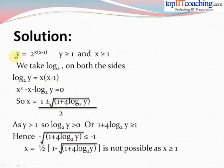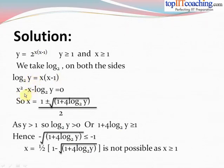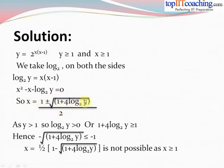Given y = 2^(x(x−1)), with the condition that y ≥ 1 and x ≥ 1. We take log base 2 of both sides to get log y (base 2) = x(x−1). This reduces to the quadratic equation x² − x − log y (base 2) = 0. Solving this quadratic, we get two values: x = (1 ± √(1 + 4·log y to base 2)) / 2.